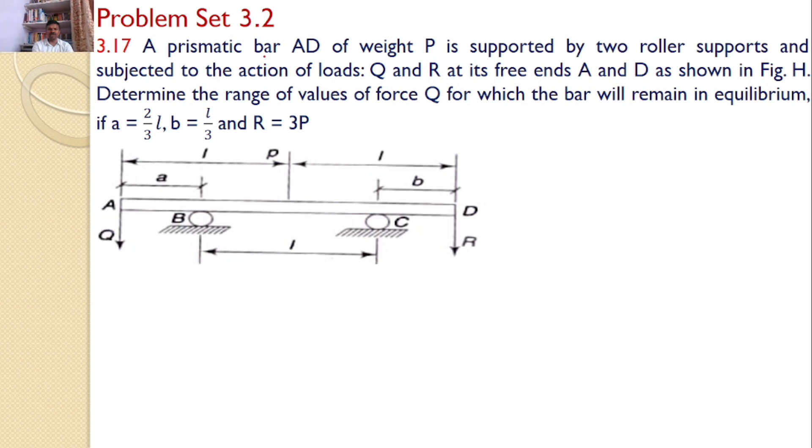In this tutorial, we will discuss problem set 3.2, problem number 3.17. A prismatic bar AD of weight P is supported by two roller supports and subjected to the action of loads Q and R at its free ends A and D, as shown in figure H.